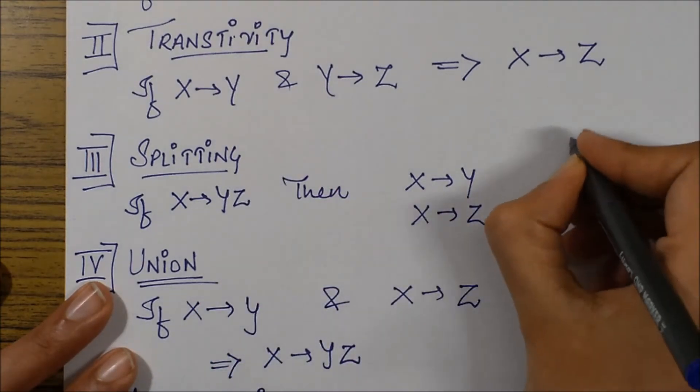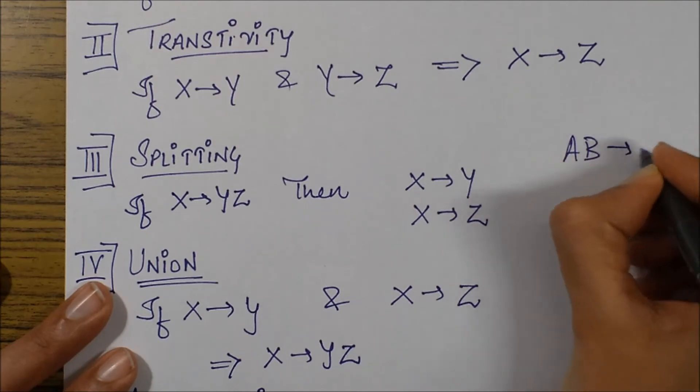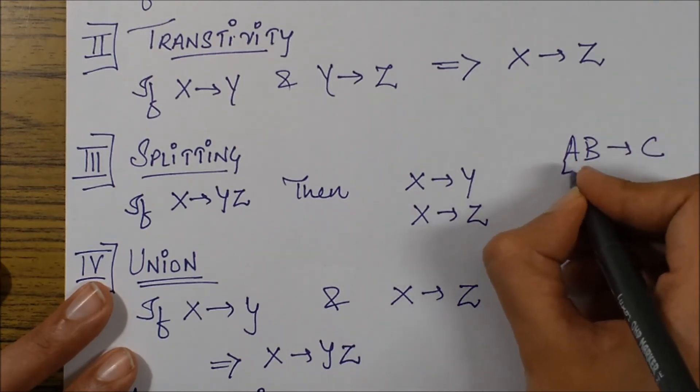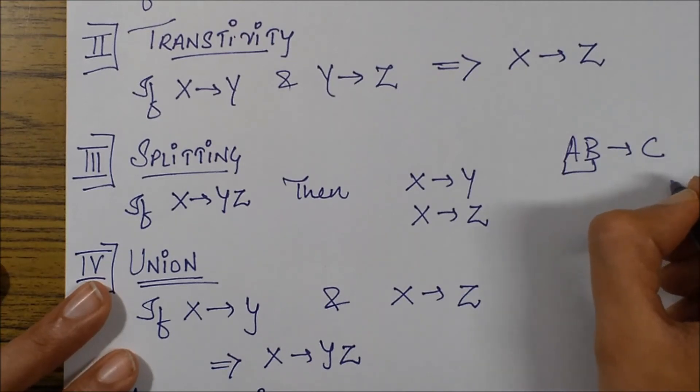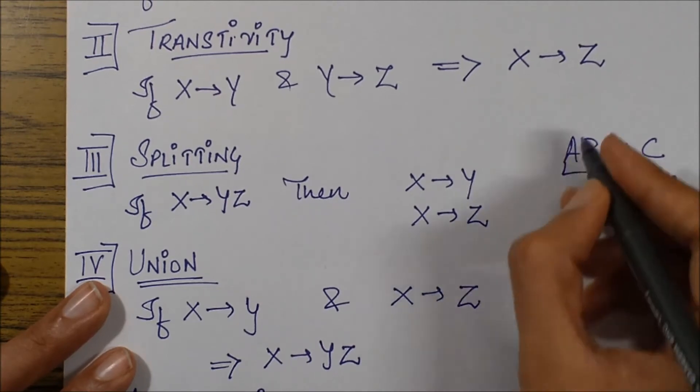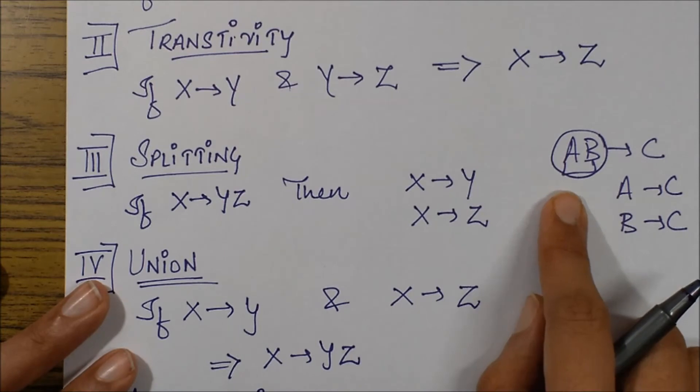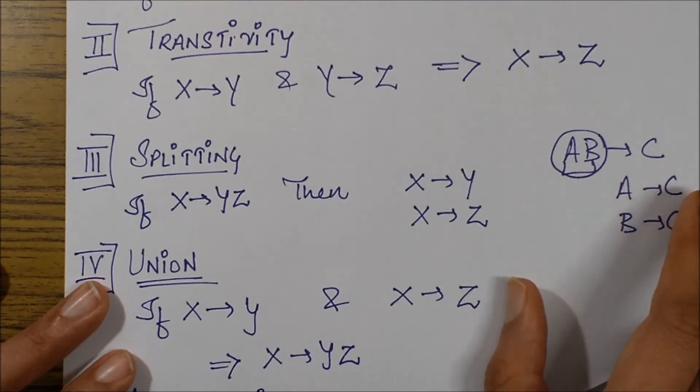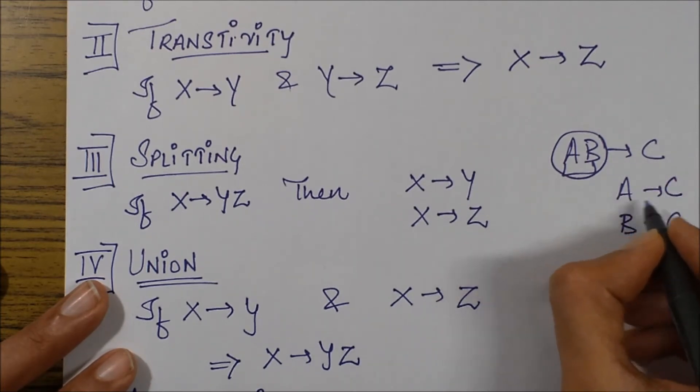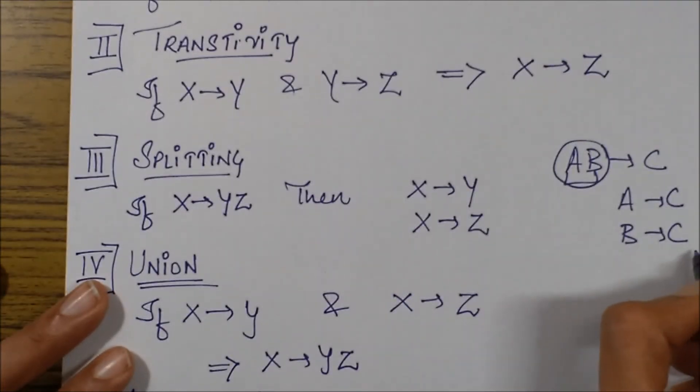What I mean is, if I say AB goes to C, that is AB together determine C, then I cannot say that A determines C and B determines C. This is because AB forms a candidate key, which is a combined or composite candidate key. What I mean by this is that A and B together in combination are able to determine C. So A alone cannot determine C, B alone cannot determine C.